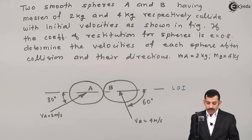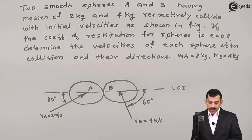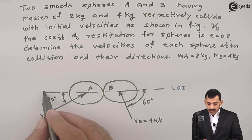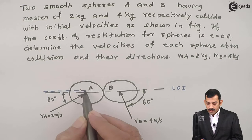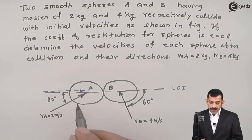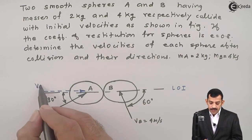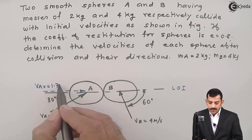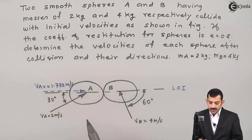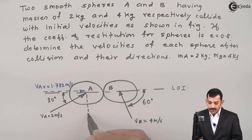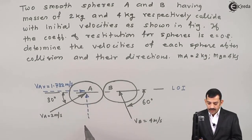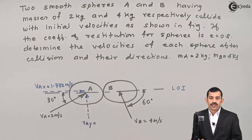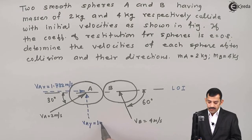The first step is to resolve these velocities. vA is 2 m/s. Resolving in the horizontal direction, the horizontal component vAx = 2 cos 30° = 1.732 m/s. Resolving in the vertical direction, the upward component vAy = 2 sin 30°. Since sin 30° is 0.5, this component becomes 1 m/s.